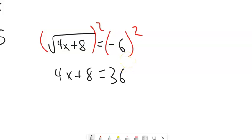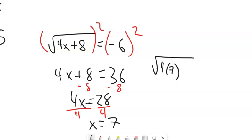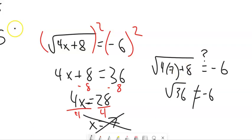Same sort of stuff as before. We just have this linear equation to solve. So let's go ahead and subtract 8 from both sides, then divide by 4. And I get 7. Let's plug it back in and see what happens. Does this equal negative 6? 4 times 7 is 28, 28 plus 8 is 36. The square root of 36 does not equal negative 6 — it equals positive 6. So this answer I have to throw out.